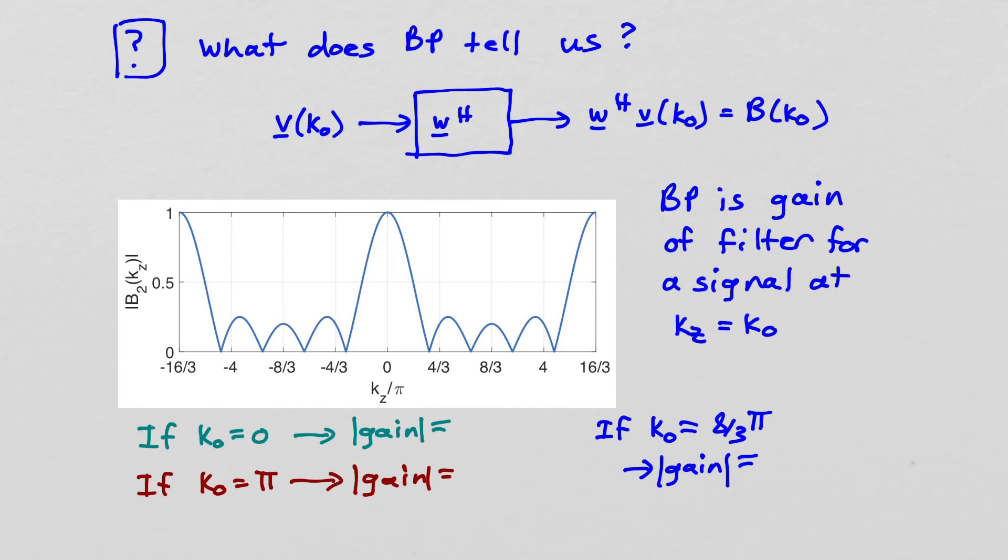So let's consider the case where k0 is equal to 0. So the input spatial frequency is equal to 0. Well, we read off the beam pattern, right? And at 0, well, here's 0. So at 0, the beam pattern is equal to 1. So the magnitude of the beam pattern is equal to 1. And what does that tell us? That tells us that if k0 is equal to 0, the signal will pass through the spatial filter undistorted in amplitude, right? So it applies a unity gain. So it'll allow that signal to pass through with the same amplitude it had at the input.